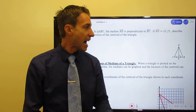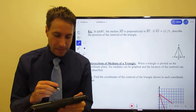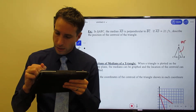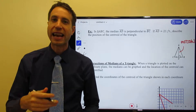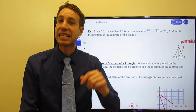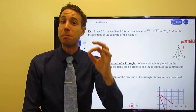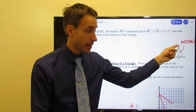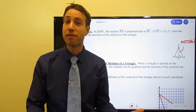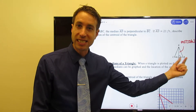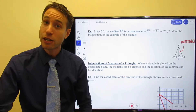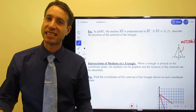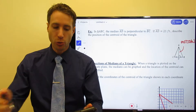I know that AD is a median. How do I know that? A median extends from the vertex to the midpoint of the opposite side. AD starts at vertex A and extends to the midpoint of the opposite side. I know it's a midpoint because it splits the side into two congruent segments, so AD is a median.